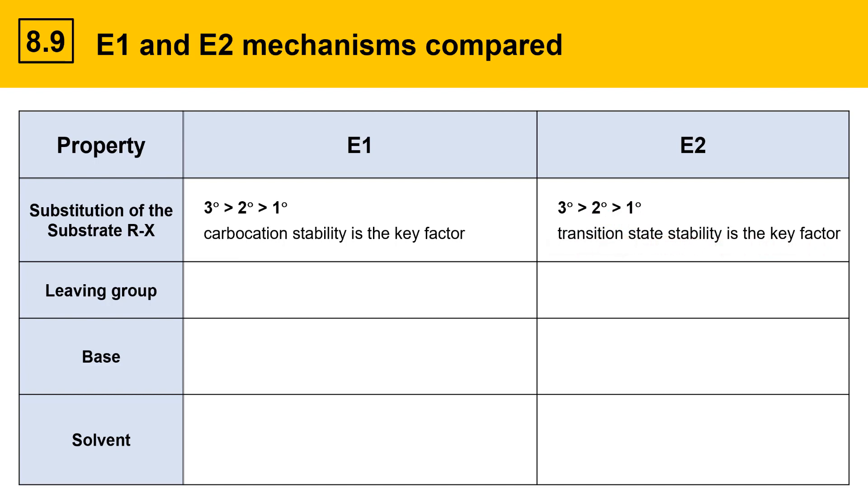A more stable transition state for E2 means a lower activation energy and a faster reaction. The more highly substituted alkyl halides, the tertiaries, and to a lesser extent the secondaries, have more substituted character in their transition state, which has double bond character developing. So since alkene stability is based on substitution, more substituted E2 transition states are more stable.